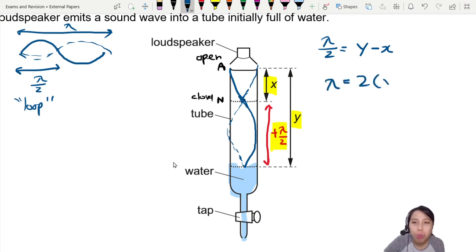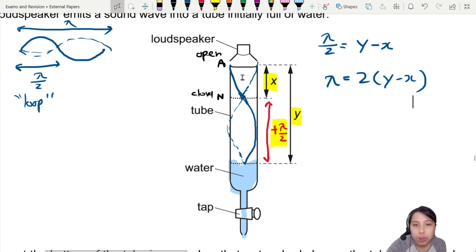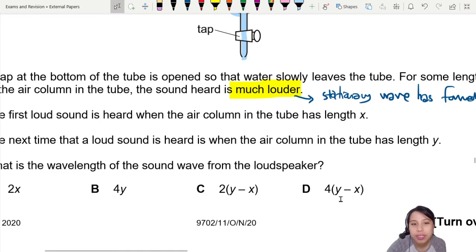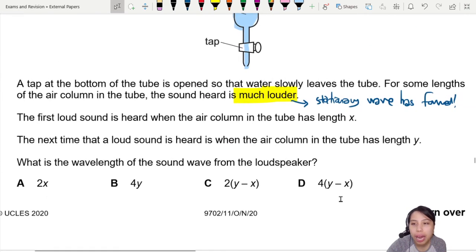That's pretty much it. Let's check the answer to see which one is the best. Remember, you go from one stationary wave to the next one, the next loud sound you add a lambda over 2—that's going to be a distance. So the best choice here will be 2 times (y minus x), which is C.